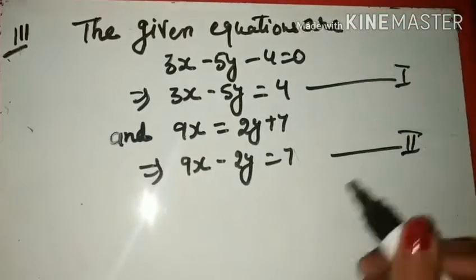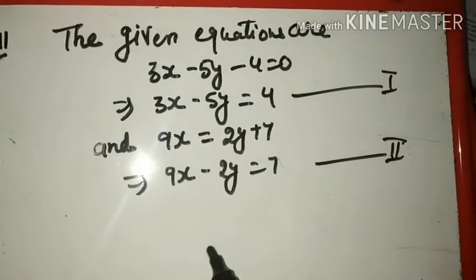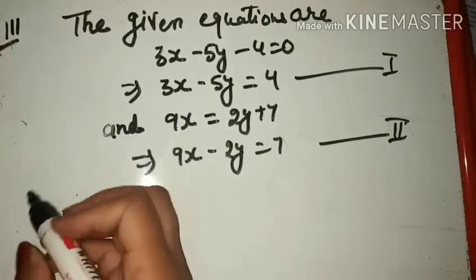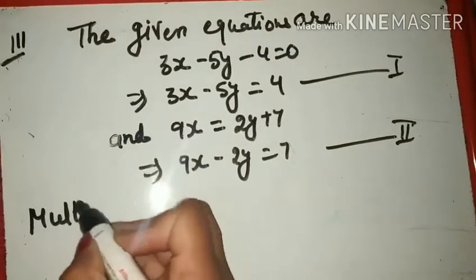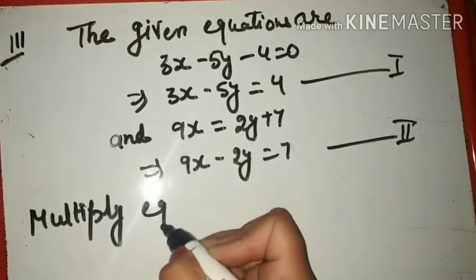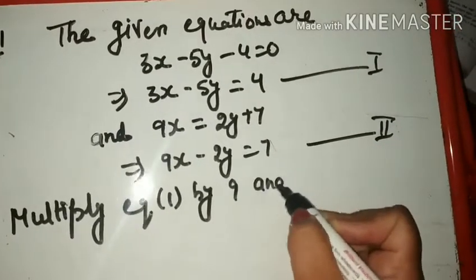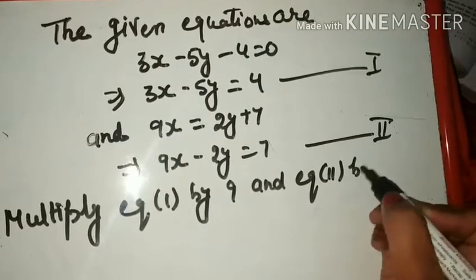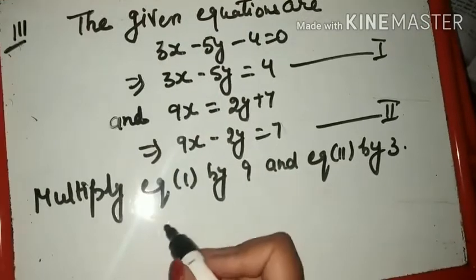Change मैंने इसलिए किया है क्योंकि कुछ बच्चे confuse हो जाते हैं, otherwise change नहीं किया चाहे, इसमें कोई problem नहीं है। अब क्या करेंगे: Multiply Equation First by 9 and Equation Second by 3।